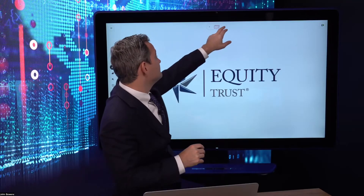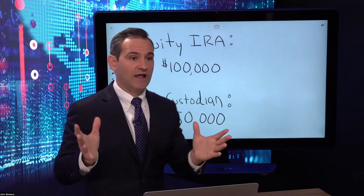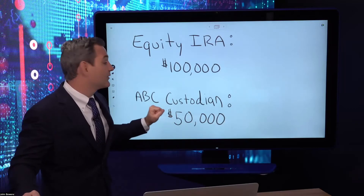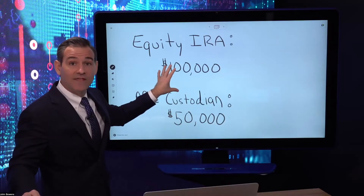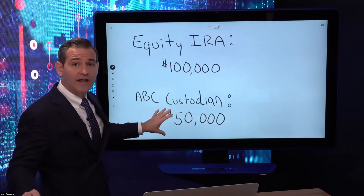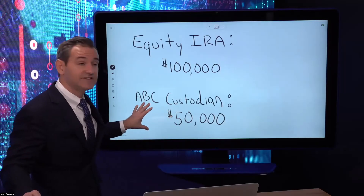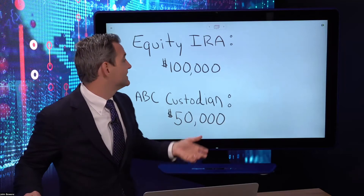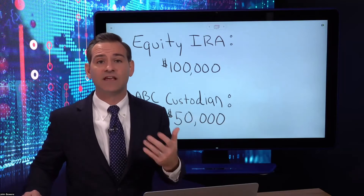Let's now transition to how to calculate these required minimum distributions. We're going to call our investor client John Smith. John Smith has an Equity Trust IRA with $100,000 in value, and he also has an IRA with another custodian—let's call it ABC custodian—with $50,000 in that account.